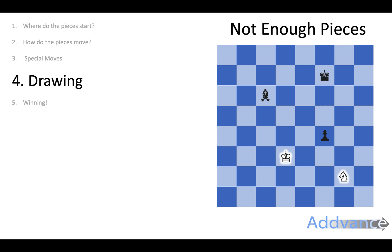Here's another drawing scenario where the knight takes the pawn. Now neither player has enough pieces to win the game. You cannot checkmate the king with just a bishop and a king, and you cannot checkmate the other king with a knight and a king. So neither player can go to checkmate, and both players agree to a draw.